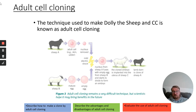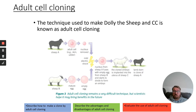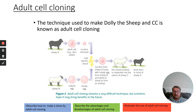You then take a mature egg with a nucleus from a second sheep, Sheep B, and remove the nucleus to give you an empty egg. You combine the empty egg from Sheep B and the nucleus from Sheep A and get them to fuse together by giving them a mild electric shock. The fused cell then starts to divide to form an embryo. You implant this cloned embryo into a third sheep, and the final lamb will be born genetically identical to Sheep A — not related genetically to Sheep B or Sheep C in any way.